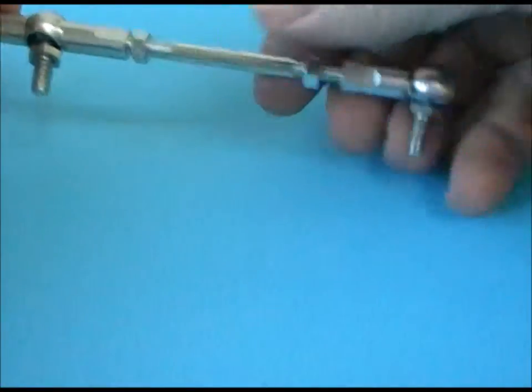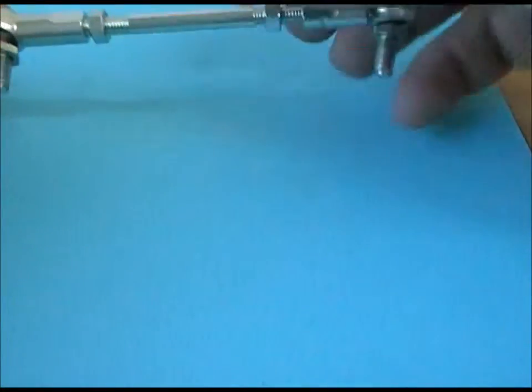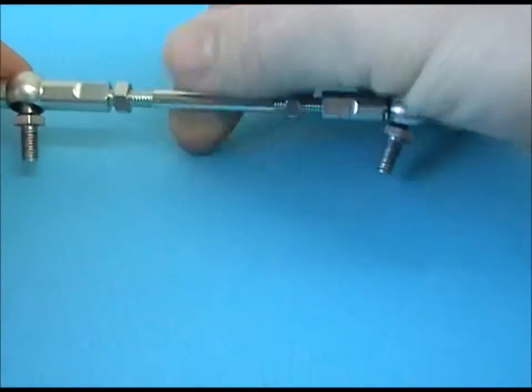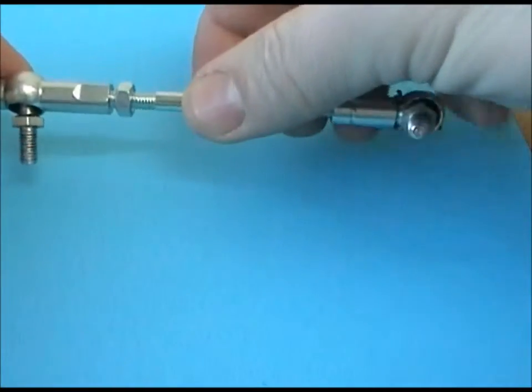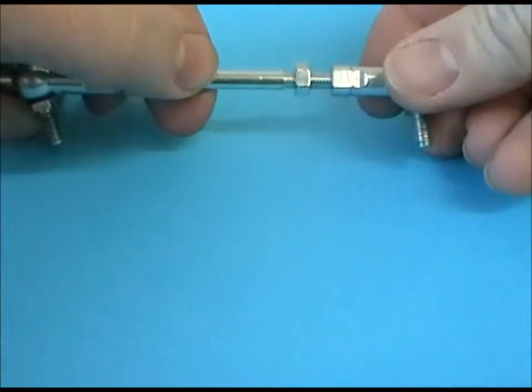How to adjust the distances between the two? It's a simple matter of turning the rods. Because they've got left hand, right hand threads, when you turn the rods, the two will move out.